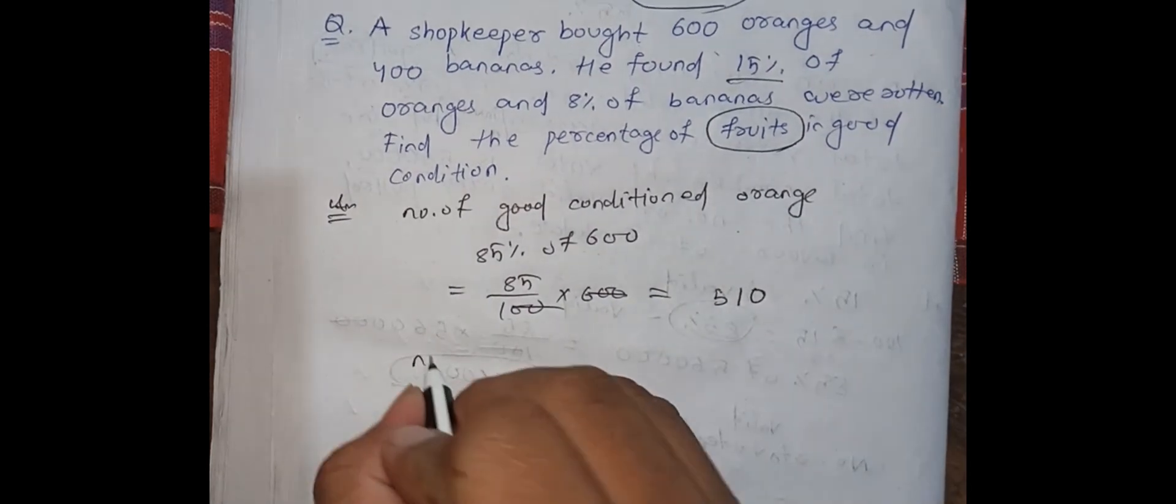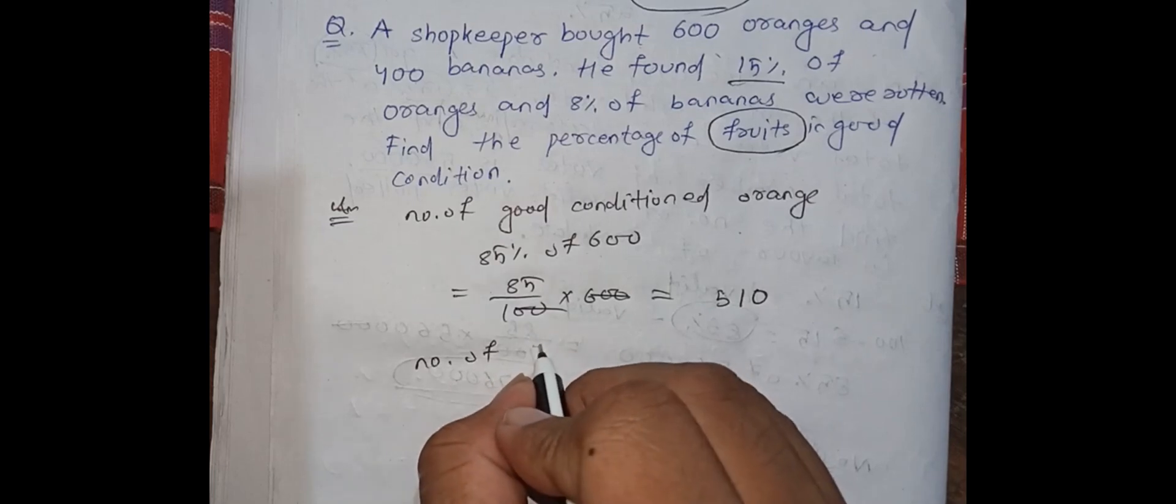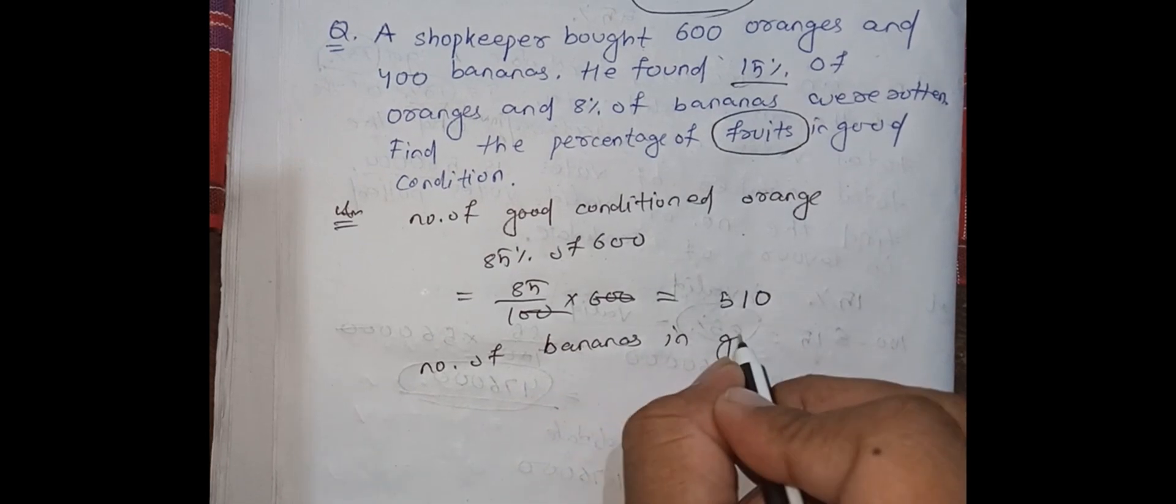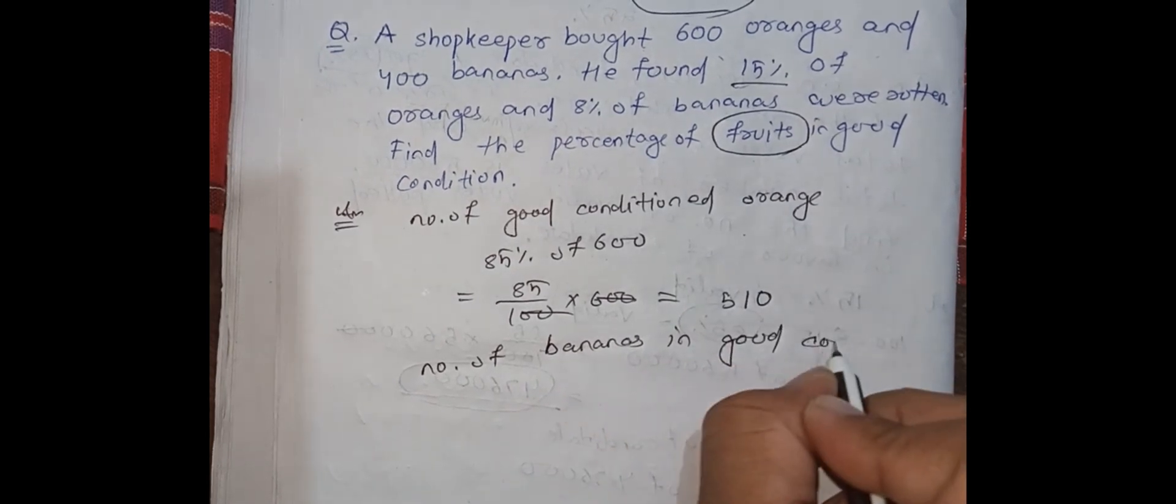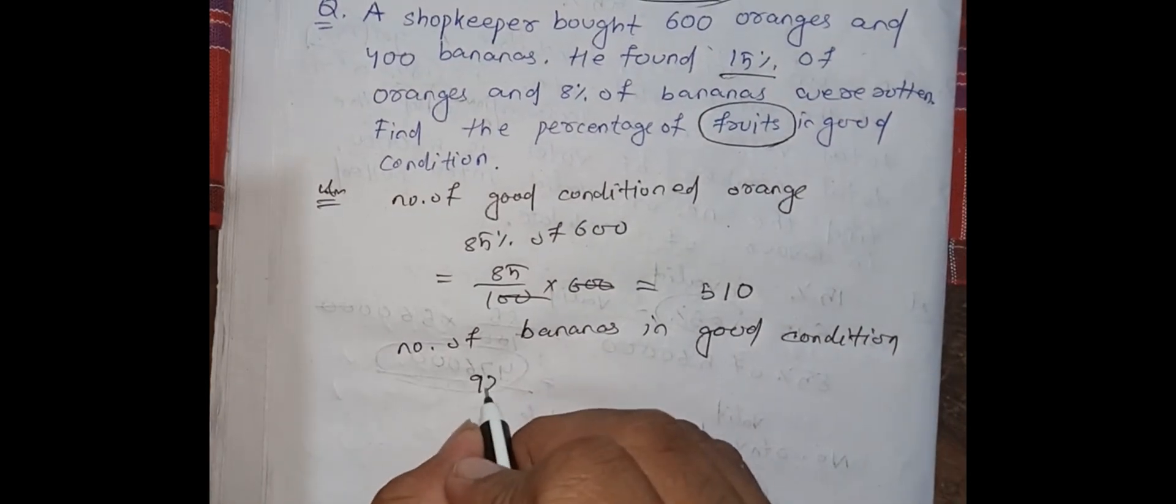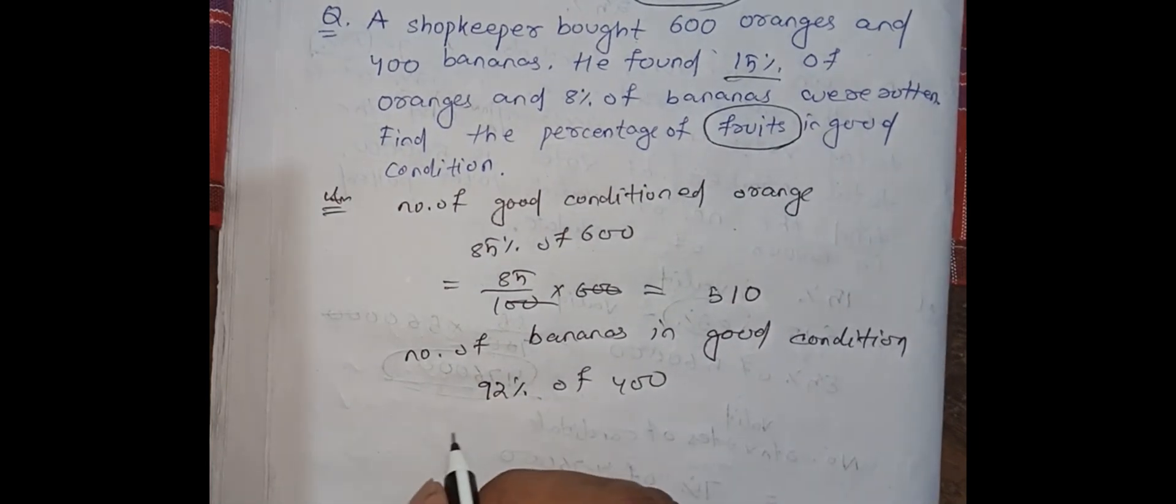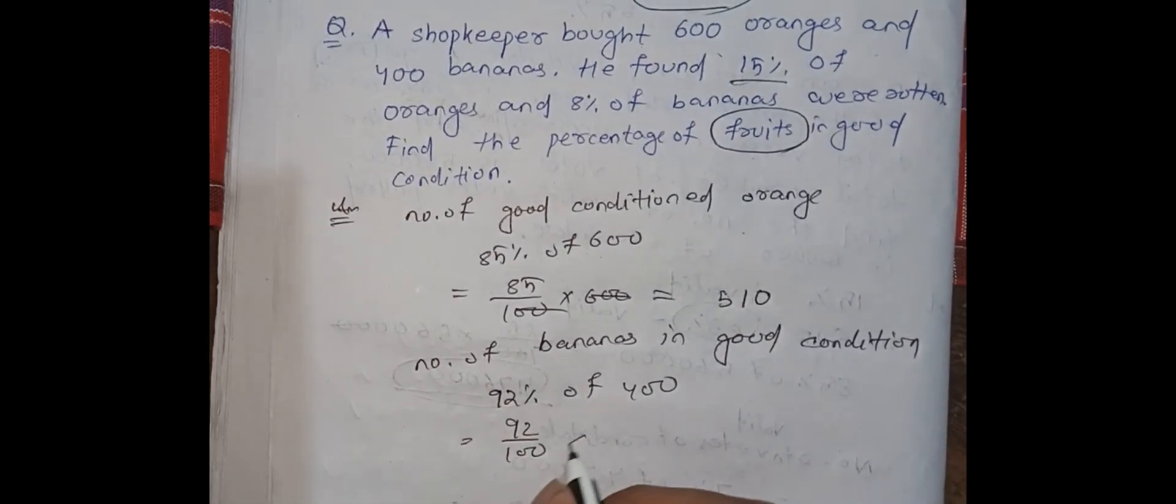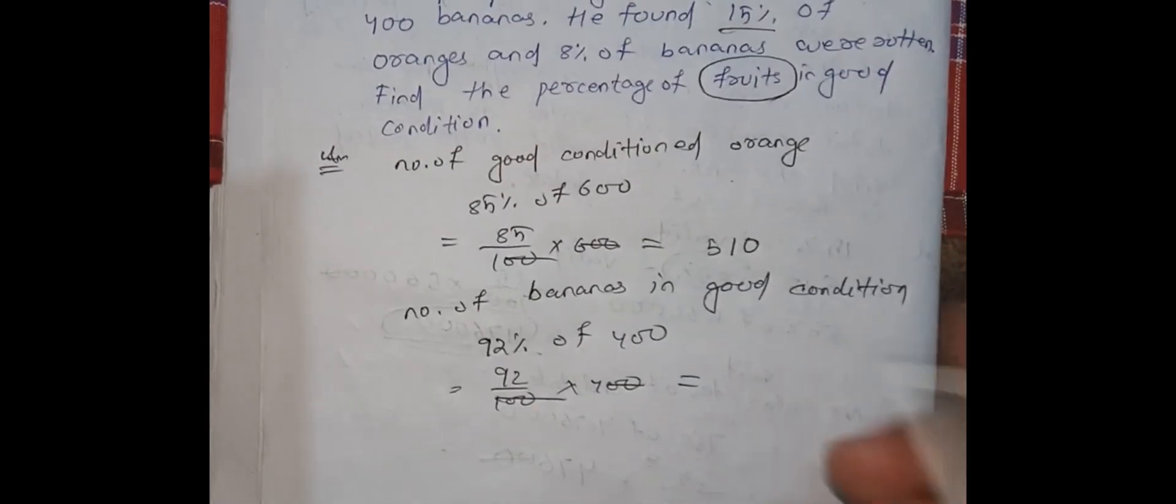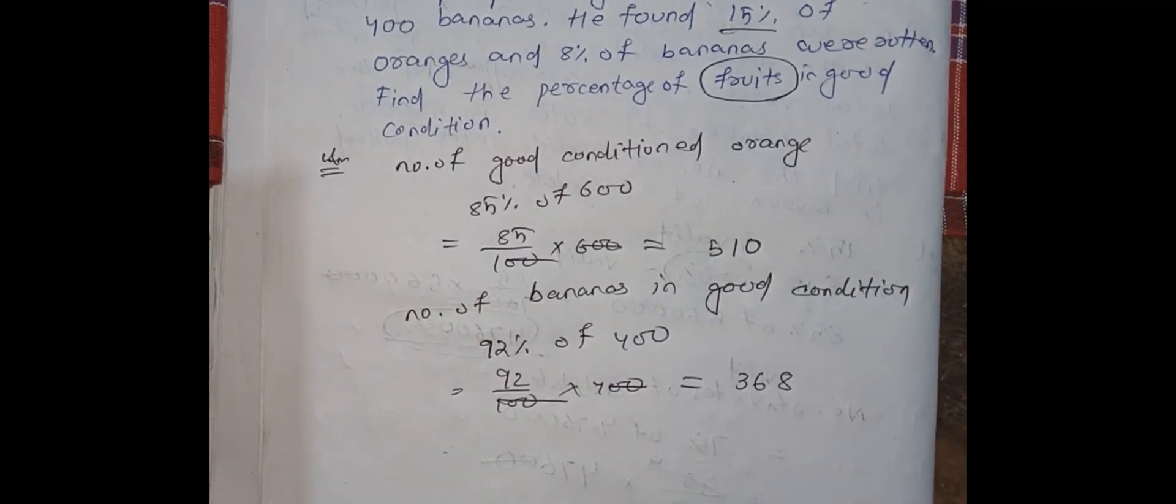And then, number of bananas in good condition. The number of bananas in good condition is 92% of the total, that's 400. So this is equal to 92 by 100 into 400. Two zeros will be cancelled out. And the answer will be 92 into 4: 4 times 8, 9 times 4, 36, 300 and 68.